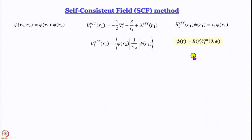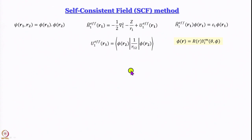Capital R leads to a quantum number N, but eventually N becomes a variational parameter. The theta-phi dependent part is associated with quantum numbers L and M. Writing it this way requires the Hamiltonian in spherical polar coordinates, and then we do separation of variables — the same approach as for the hydrogen atom.